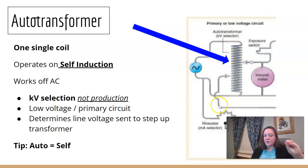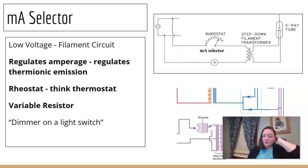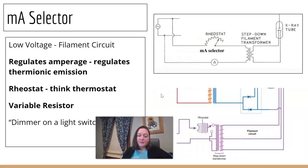Just underneath your auto transformer is something called the MA selector or the rheostat. So we just selected our KV at the auto transformer. We're going to select our MA at, it's either going to be called the MA selector or a rheostat. And I think MA selector is too easy. So we're going to go with rheostat. This also makes me think of a thermostat. If you think MA and you think thermionic emission, that filament heats up. We're determining our MA setting. It might help you think turn up the heat. Rheostat kind of sounds like thermostat. It's also called a variable resistor. Someone taught me to sort of think of like a dimmer on a light switch. Like how much intensity do you want? So we did our KV selection, our MA selection. And now we're going to go to the other two transformers for the next part.